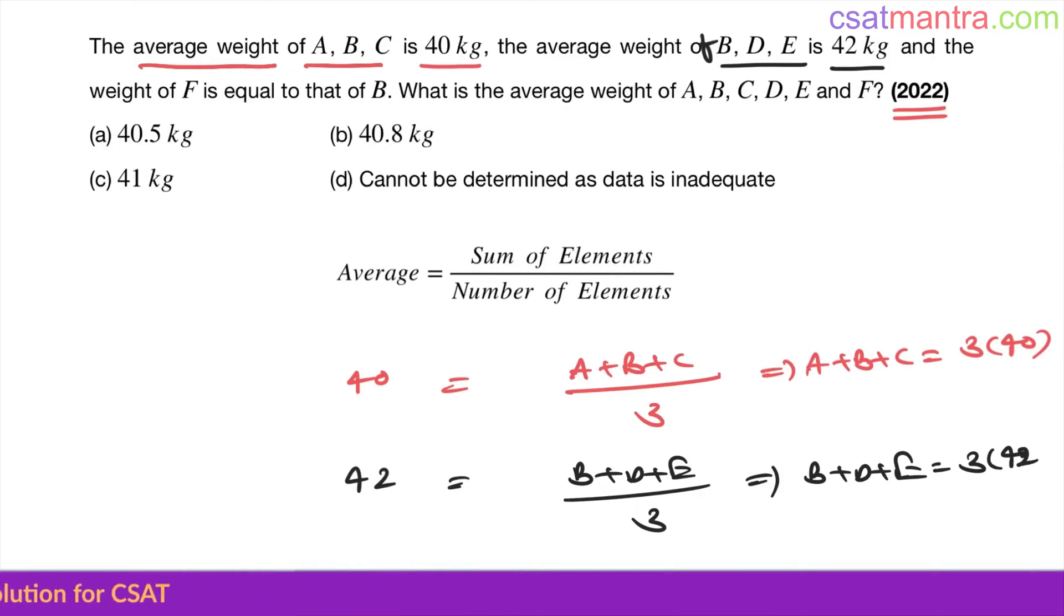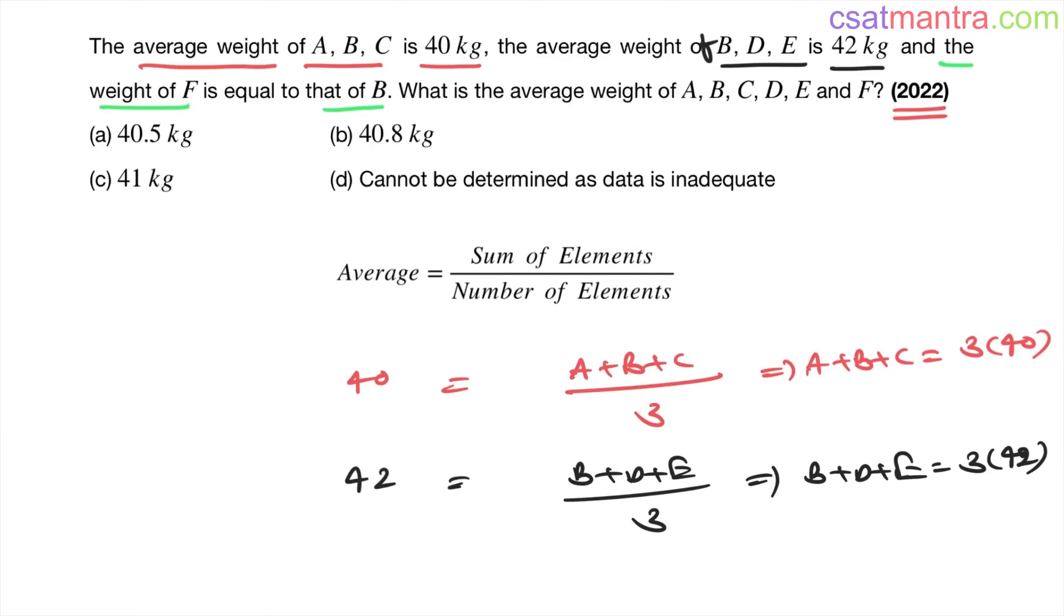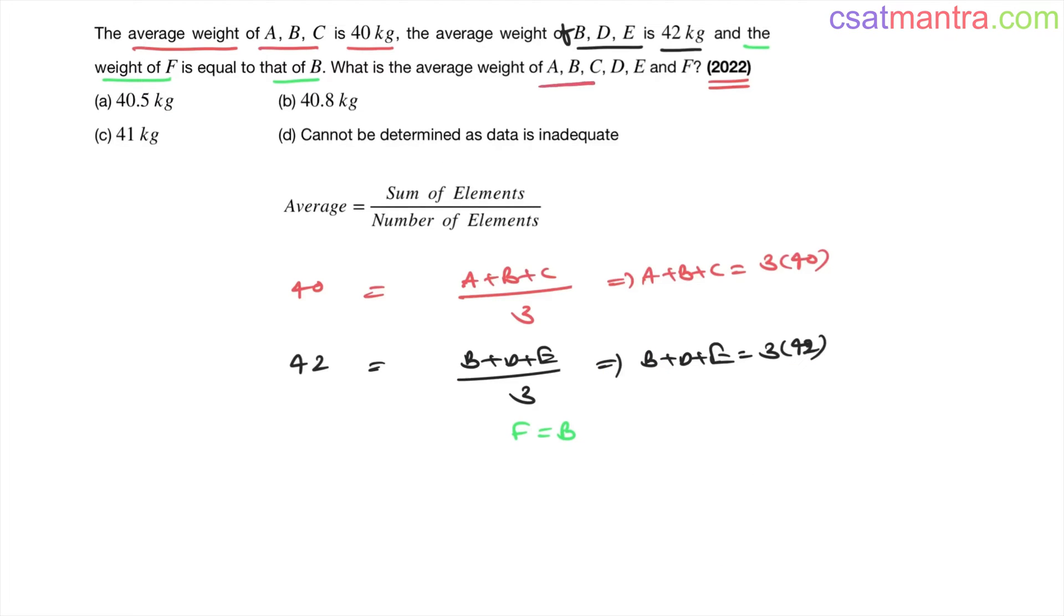And the weight of F is equal to that of B. Okay, F is equal to B. Now what is the average weight of A, B, C, D, E, F? So average weight, that is sum of elements A, B, C, D, E, F divided by how many people? Six. This is what we want.